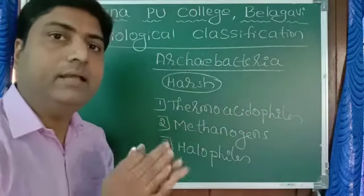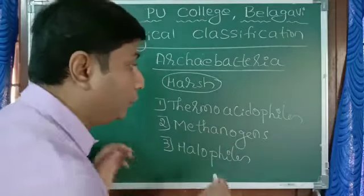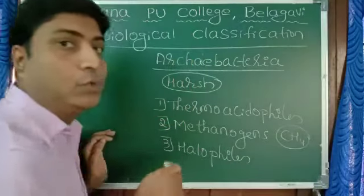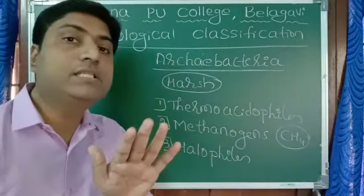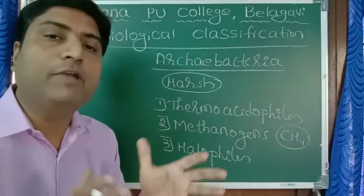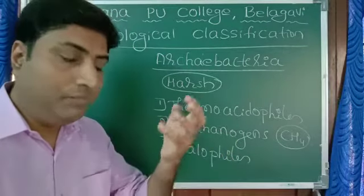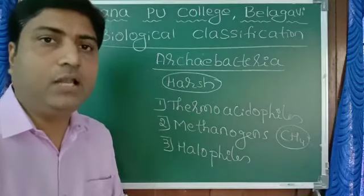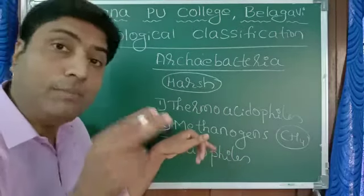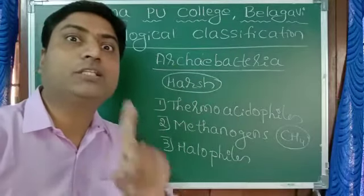Methanogens - again the name itself tells. Methanogens means they are methane producing. CH4 is methane. Methane producing bacteria. Methane is biogas. They are present in the gut of cow, buffalo etc. So when cow, buffalo throw their waste material - you call cow dung or whatever it is - it contains rich amount of methanogens in it. That's why cow dung is used in the production of biogas.